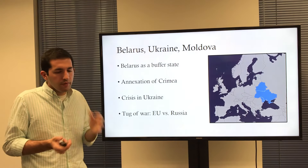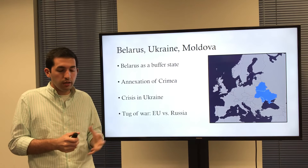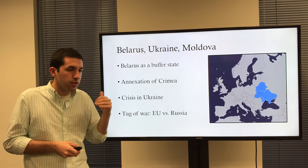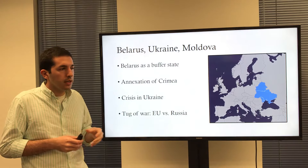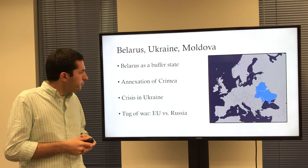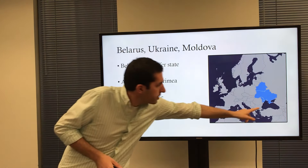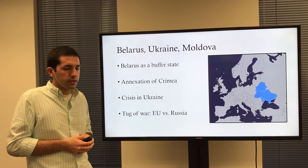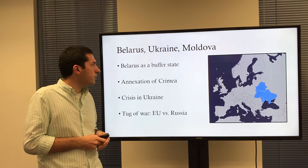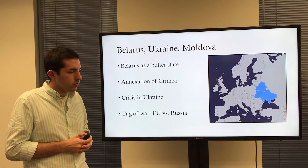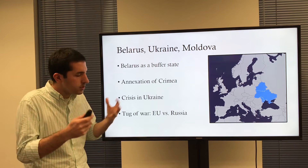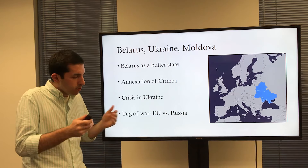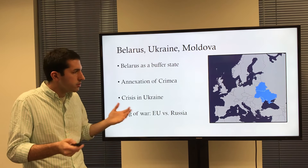Belarus, Ukraine, and Moldova — obviously a tug of war between the European Union versus Russia as to which direction they're looking in. Because of the crisis in Ukraine, Ukraine is really off the table at the moment; they're incapacitated, dealing with an internal struggle. The annexation of Crimea takes place in 2014, which gets Russia kicked out of the G8, now the G7. Belarus is viewed as a buffer state between the European Union and Russia, with Russia viewing them as a buffer stopping EU expansion before it gets into Russia.